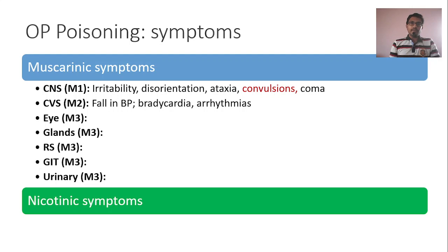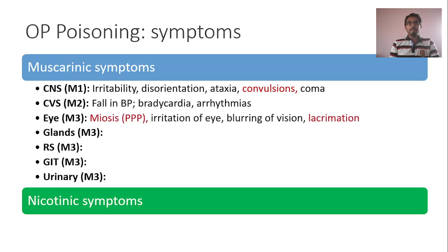M3 receptors are located in many places. In the eye, M3 receptor activation will lead to miosis. Even in OP poisoning, M3 receptor activation will lead to miosis, which is manifested as pin-point pupil — PPP stands for pin-point pupil. In addition to that, there is irritation of the eye because of the toxic nature of the compound, and blurring of vision. Lacrimation is because of action of M3 receptors on the lacrimal glands.